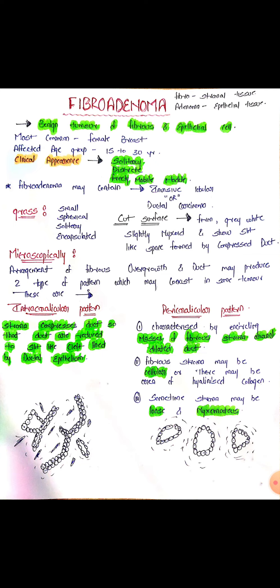Starting with the video, first of all fibroadenoma. Fibro means stromal tissue, adeno means epithelial tissue, and oma means tumor. So basically fibroadenoma means tumor of stromal and epithelial tissue.